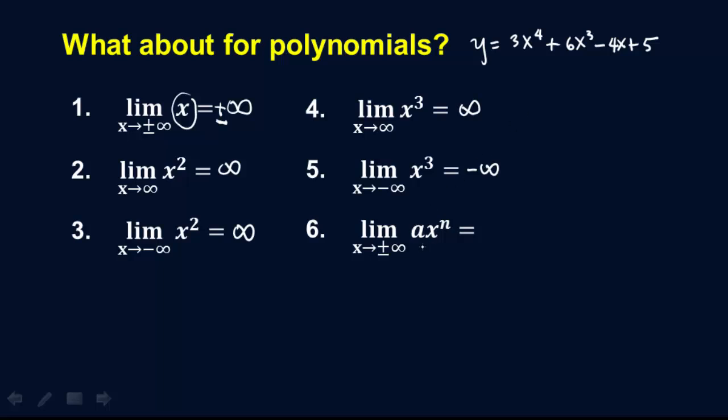So in general, if you have, say, 3x to the fourth, say, 6x to the third, etc., the limit will then depend on the coefficient of x to the n, as well as whether n is odd or even. So we'll just write here, it's either plus or minus infinity.